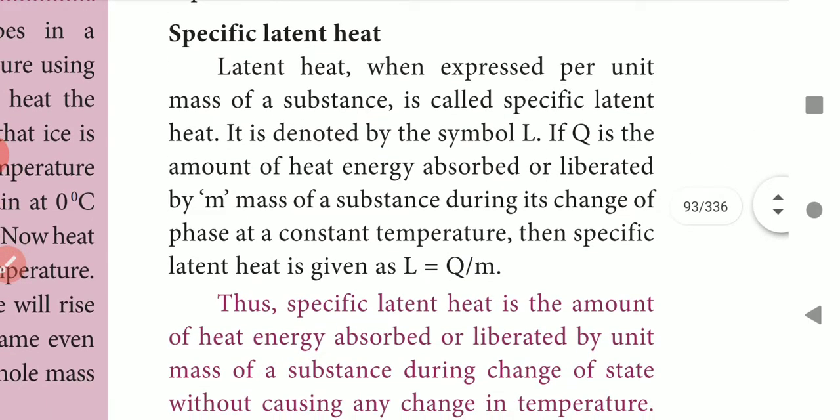What is specific latent heat? When latent heat is expressed per unit mass of a substance, it is called specific latent heat, denoted by the symbol L. If Q is the amount of heat energy absorbed or liberated by mass M of a substance during its change of phase at constant temperature, then specific latent heat is given as L = Q / M.